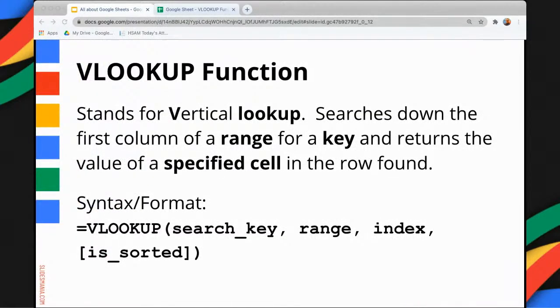VLOOKUP stands for Vertical Lookup. It searches down the first column of a range for a key and returns the value of a specified cell in the row found.